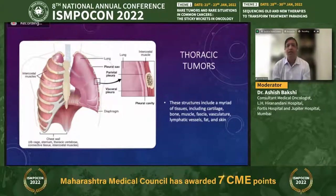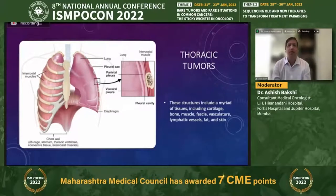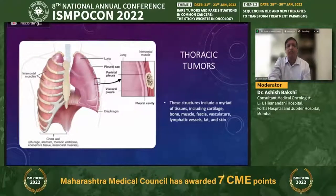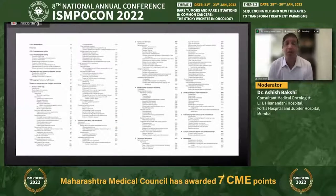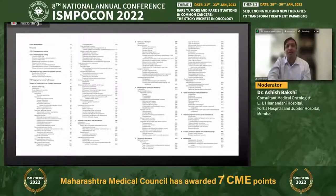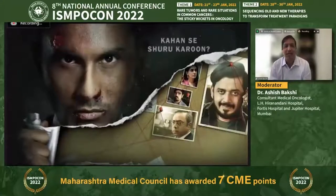When we talk about thoracic tumors, this includes a variety of tissues. Of course the most common tumor is lung cancer, but many other tumors arise from cartilage, bone, muscle, fascia, vessels, lymphatic tissue, fat, and skin in our day-to-day practice. Looking at the WHO thoracic tumor classification, the index alone is two pages — you can imagine the vast spectrum of diseases in thoracic malignancy.